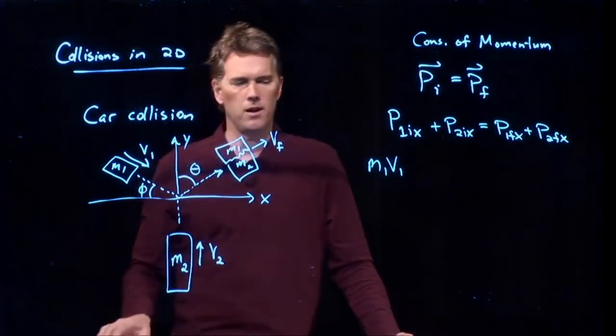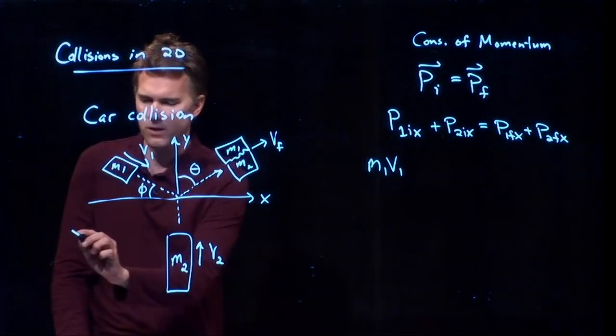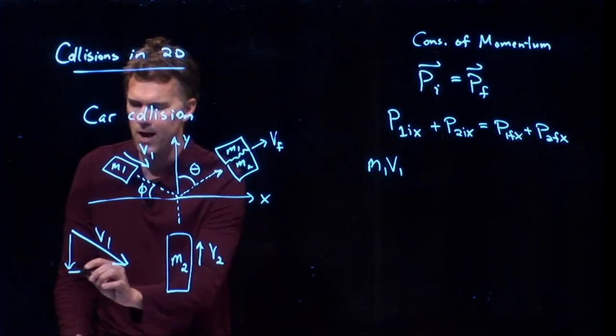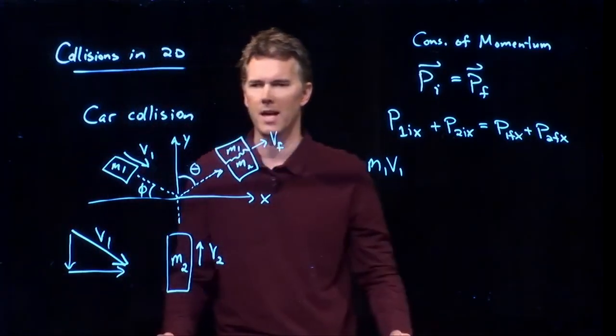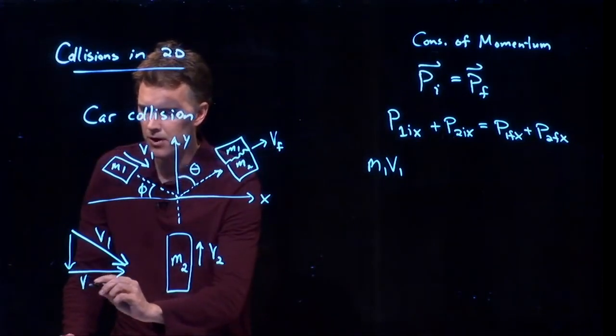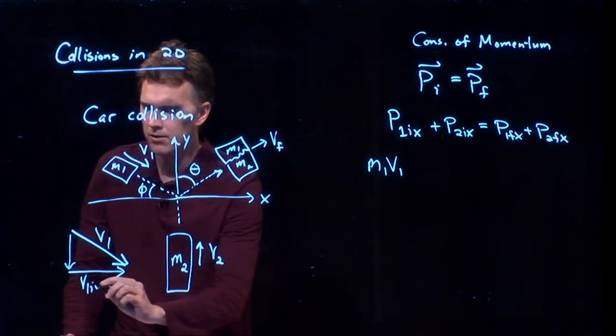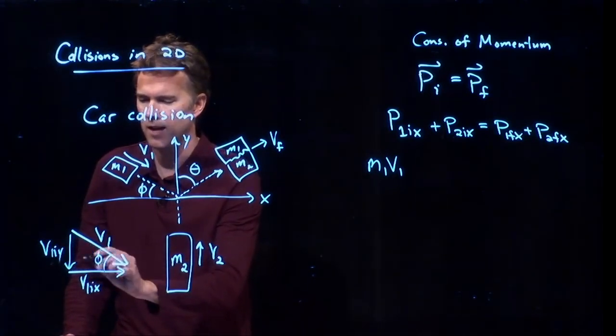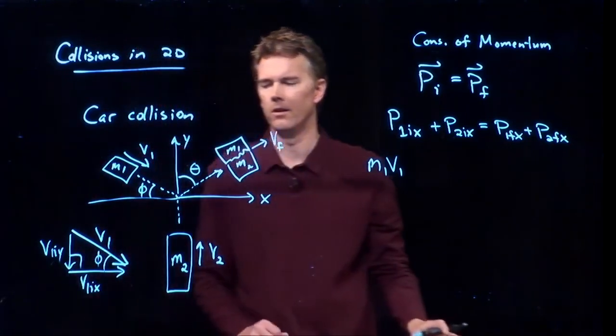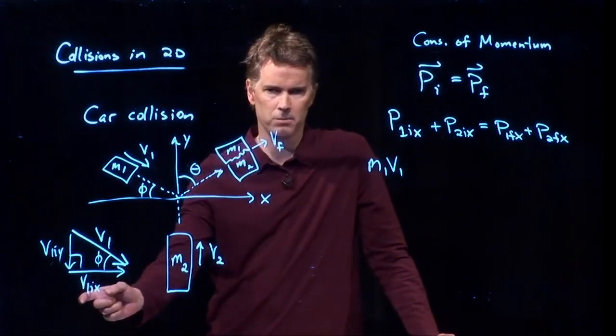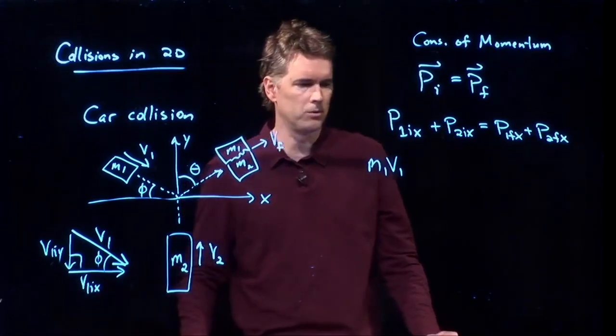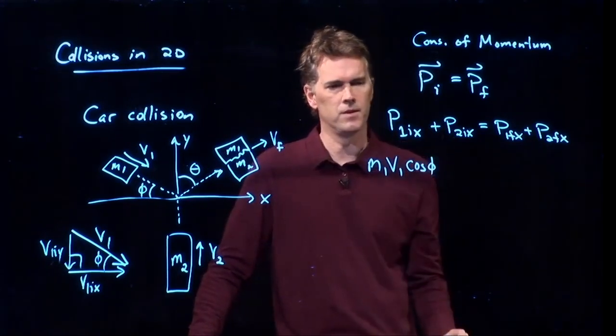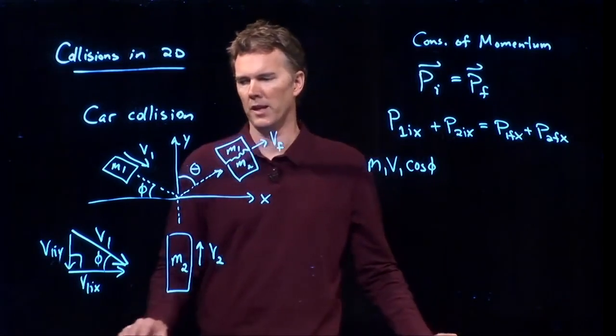So when I think about this velocity vector right there, v1, what can I say? Well, v1 is kind of coming down like that. And that's going to have some component in the y and some component in the x. And so this side of the triangle is the x. This side of the triangle is the y. And if that is angle phi and that's our right angle, then I know that this one is going to be cosine. So right here I need a cosine of phi. That's this first term p1 initial in the x.